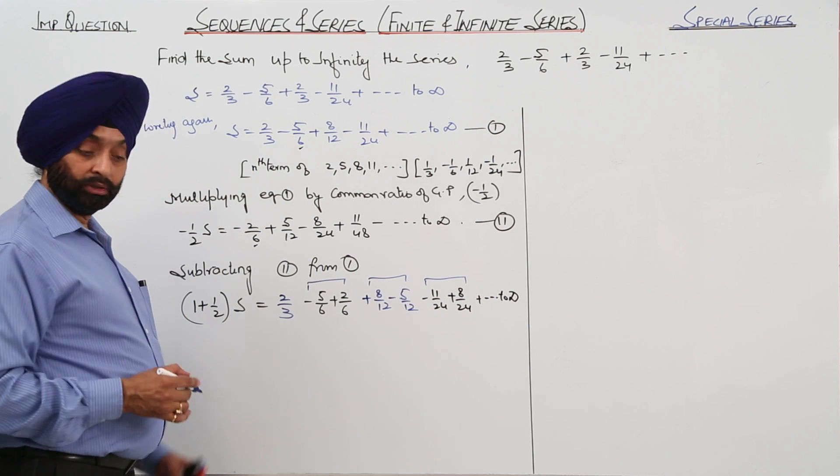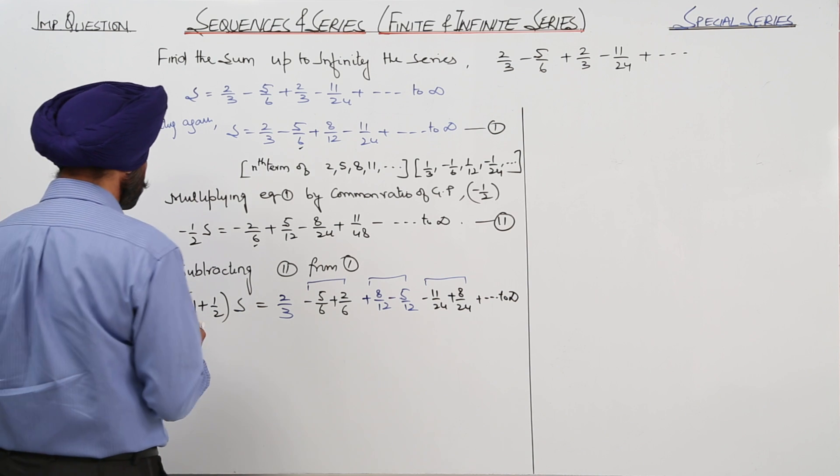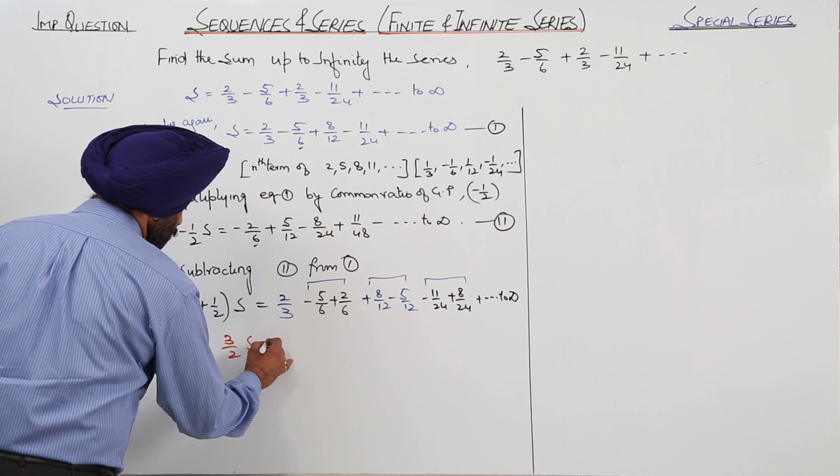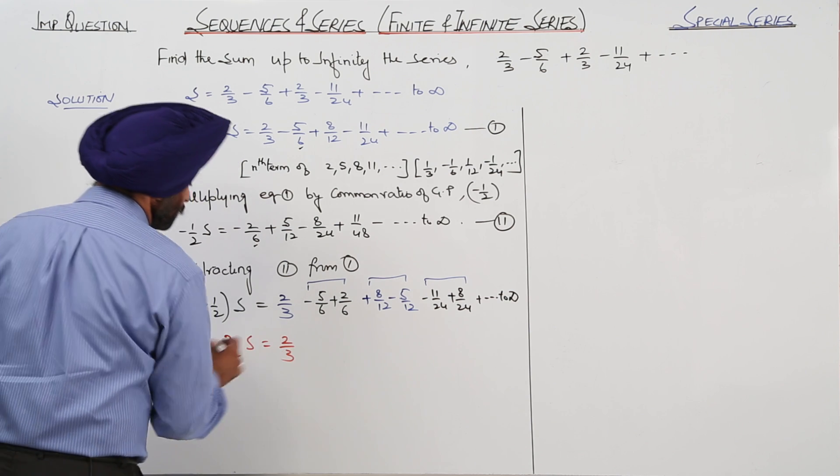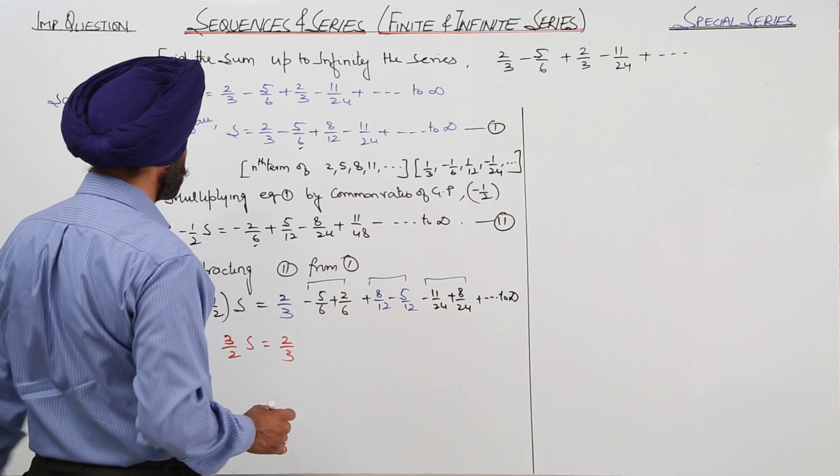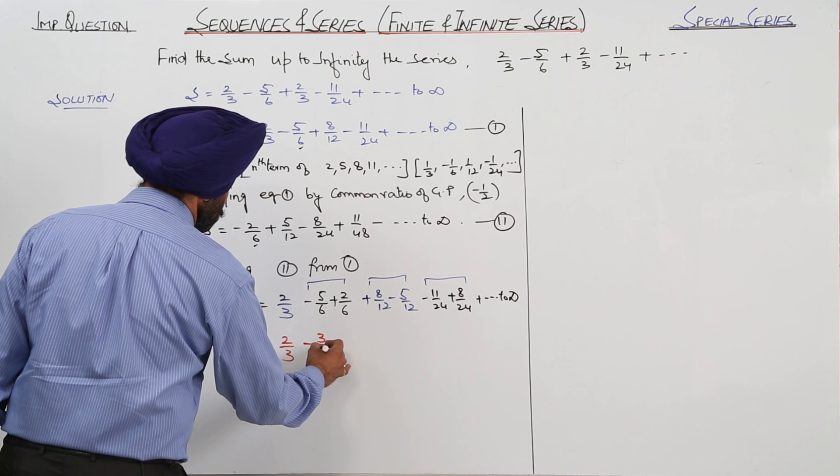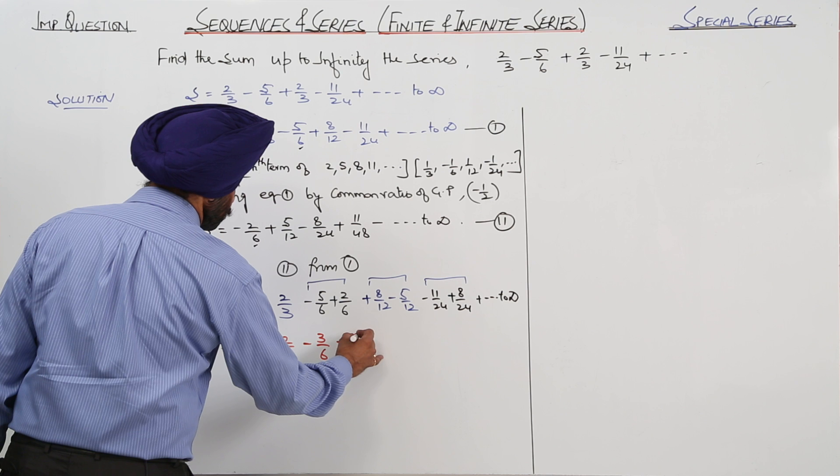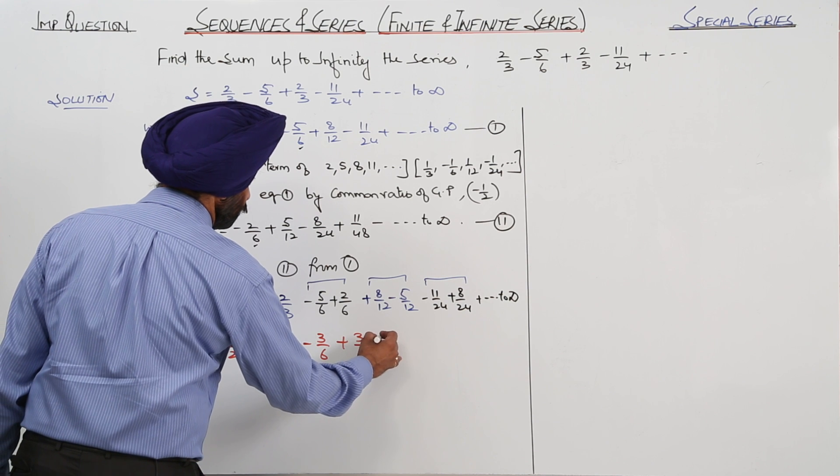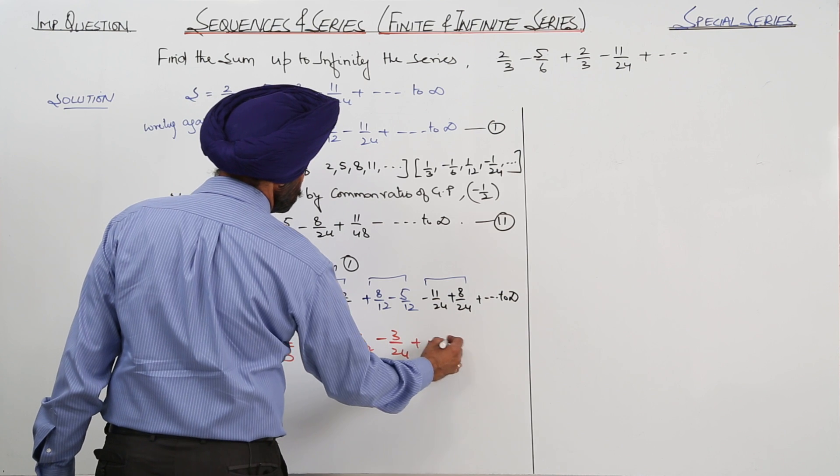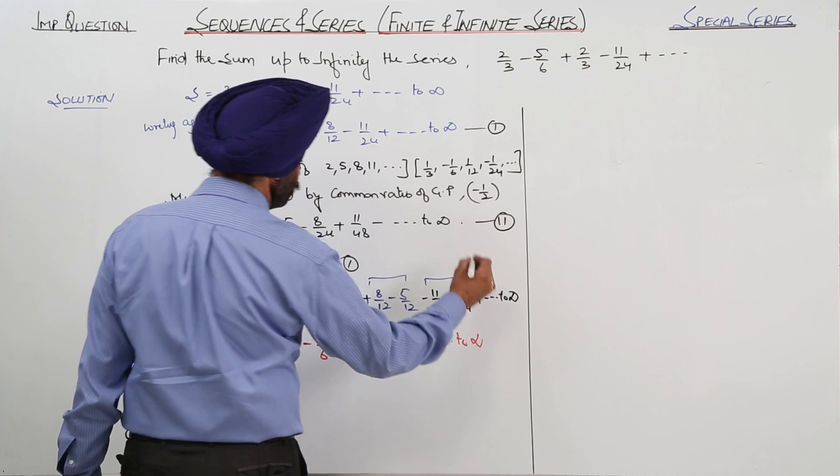So what we are getting, we are getting now 3 by 2 S is equal to 2 by 3. Now solving this part, what we are getting: minus 3 by 6 plus 3 by 12 minus 3 by 24 plus to infinity.